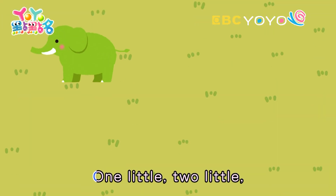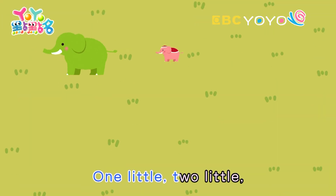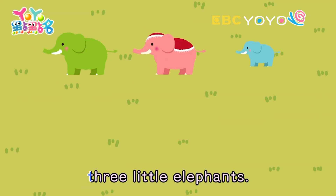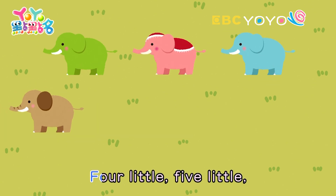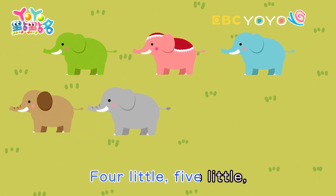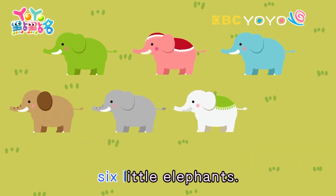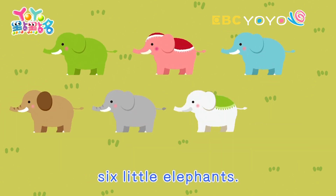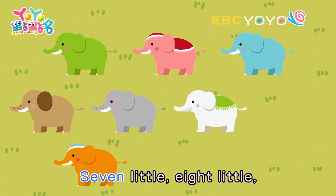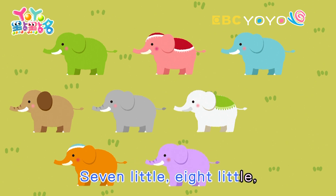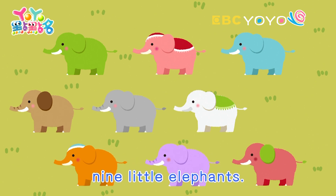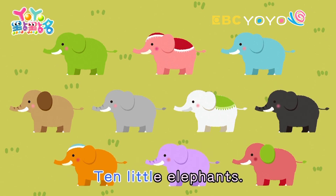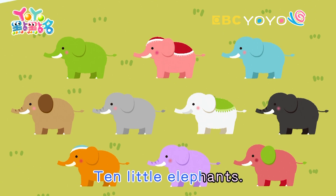One little, two little, three little elephants. Four little, five little, six little elephants. Seven little, eight little, nine little elephants. Ten little elephants.